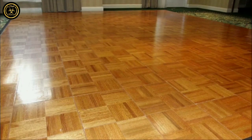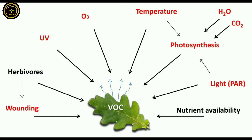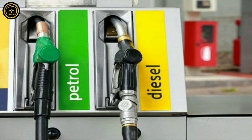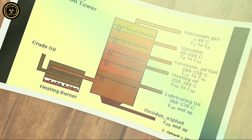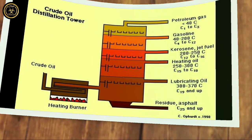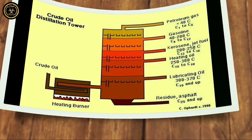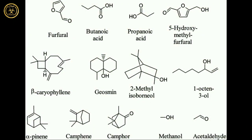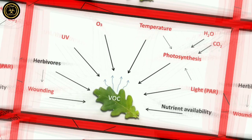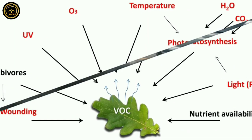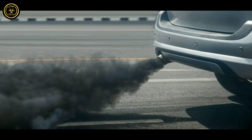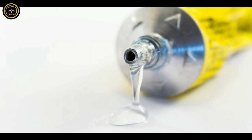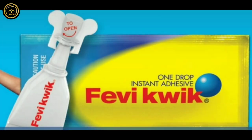VOCs, or Volatile Organic Compounds, include petrol, diesel, benzene, and other chemical compounds. They are found in cars, natural gas, glue, salons, dry cleaning facilities, and paint. These chemical compounds are used in carpets as well. We can use natural alternatives where possible.